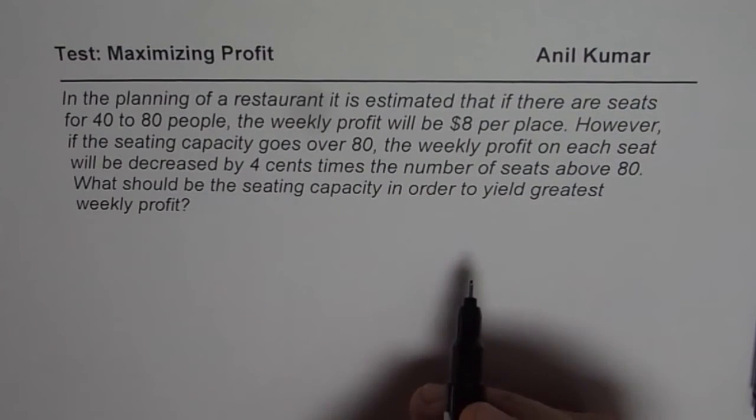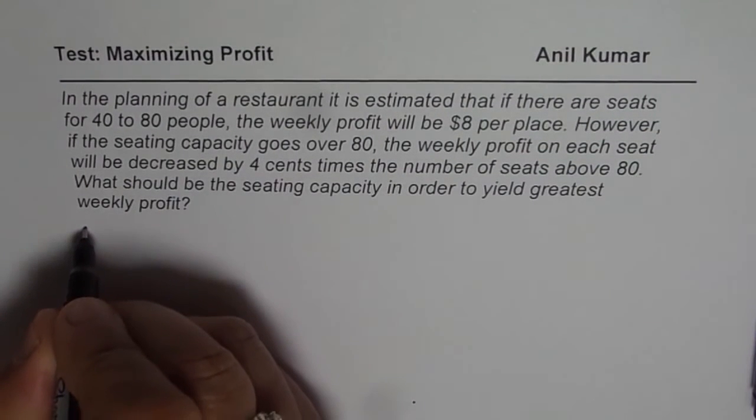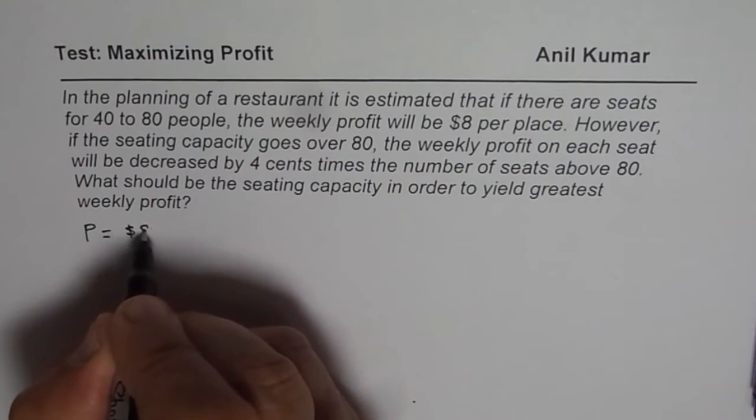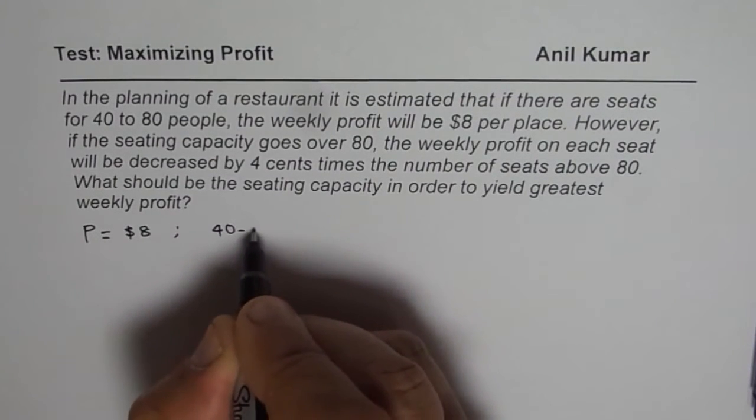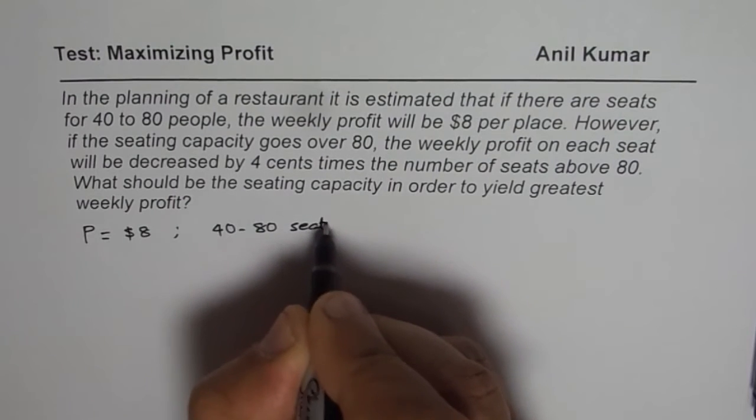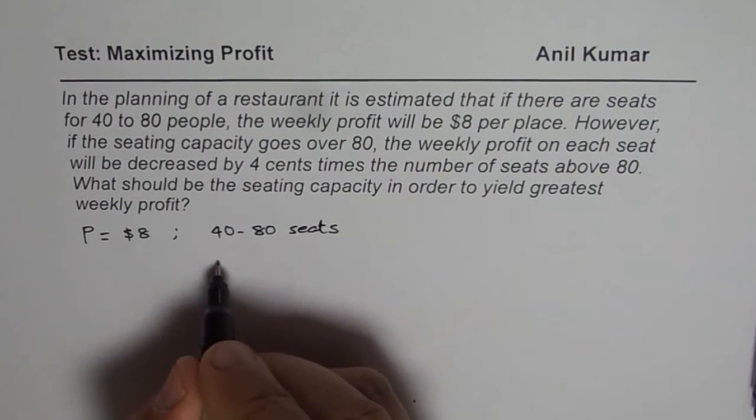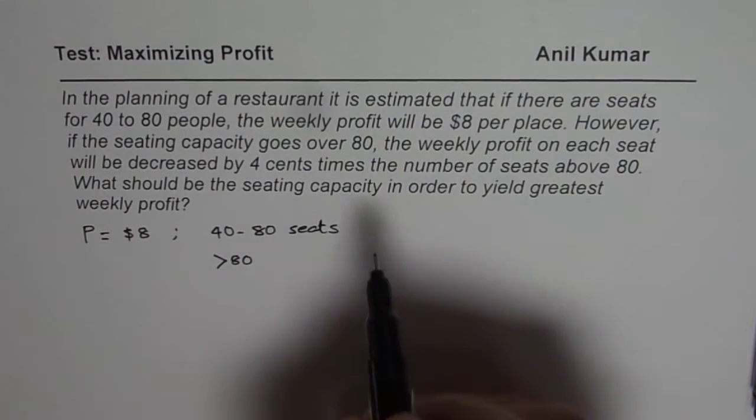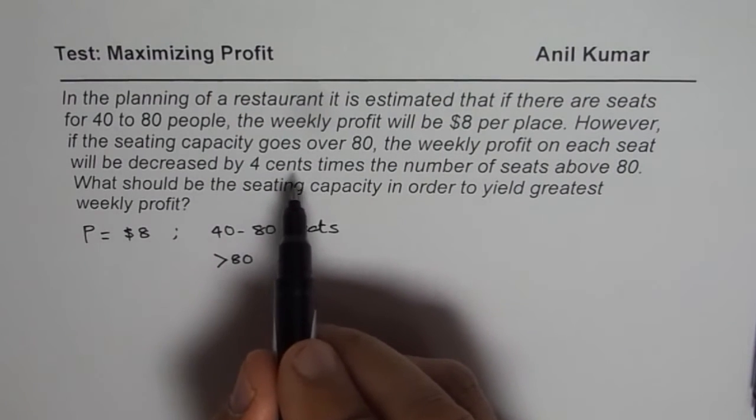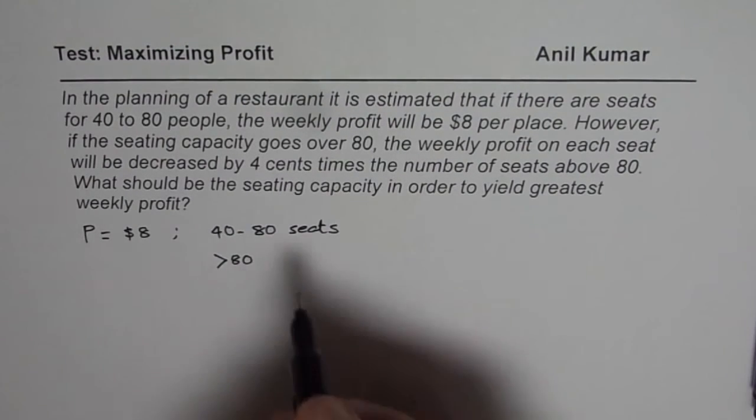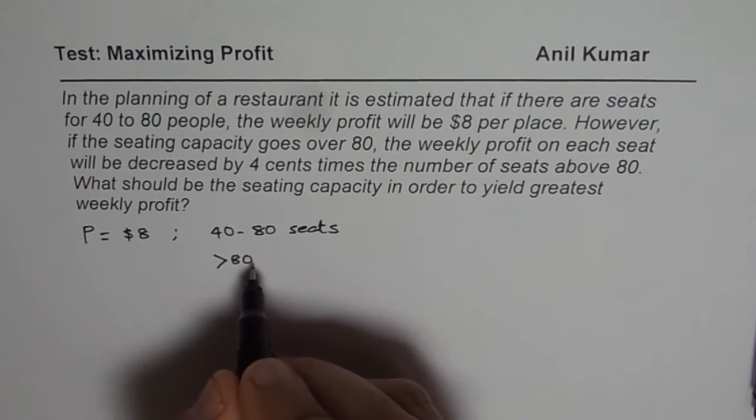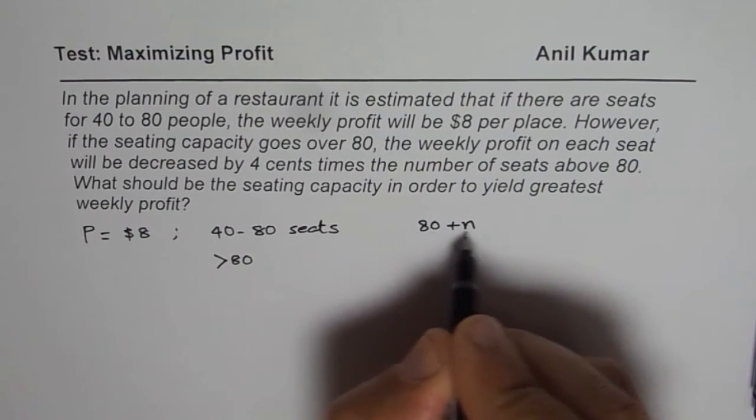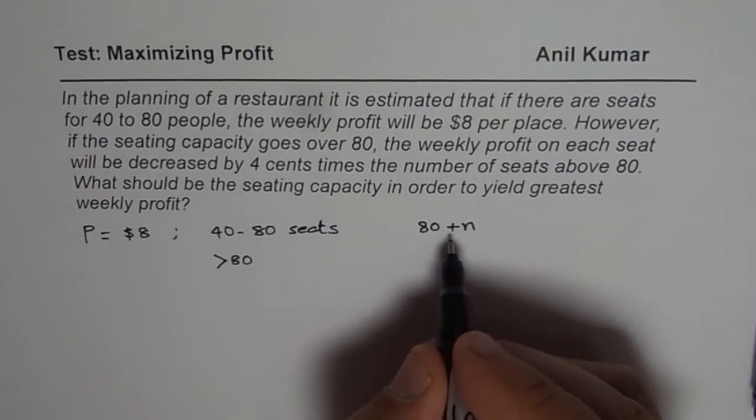So let's first write down an equation which will represent the profit. Profit is $8 for 40 to 80 seats. If we have seats which are greater than 80, in that case, profit decreases by 4 cents per increase in seat. So that means if we have something like 80 plus N, if N is the number of seats more than 80, in that case,